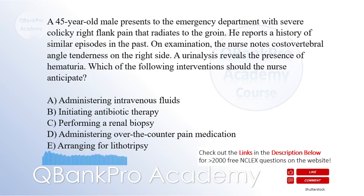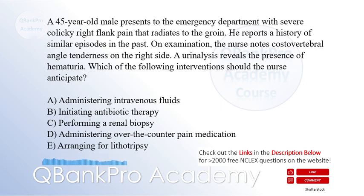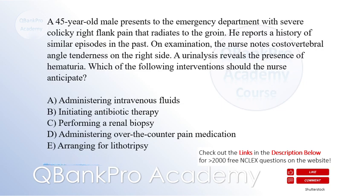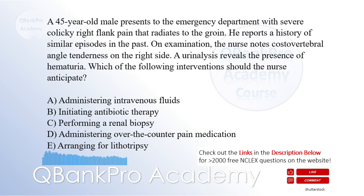A 45-year-old male presents to the emergency department with severe colicky right flank pain that radiates to the groin. He reports a history of similar episodes in the past. On examination, the nurse notes costovertebral angle tenderness on the right side. A urinalysis reveals the presence of hematuria. Which of the following interventions should the nurse anticipate?